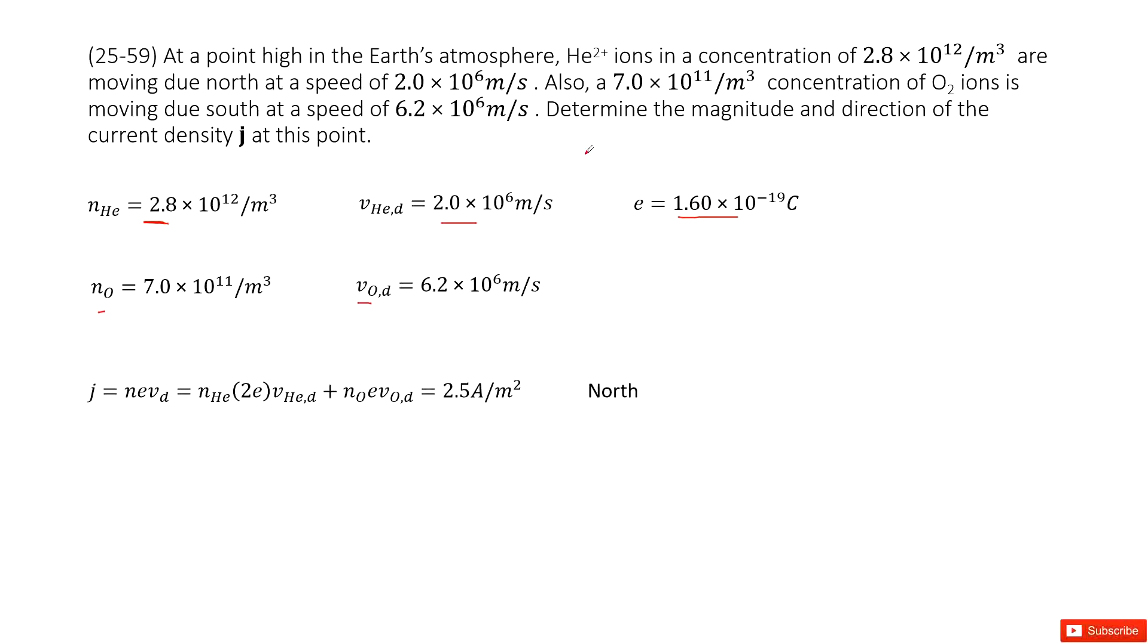So it's very easy. We can see by definition, the current density equals n times e times v_d, the drift velocity. Here we need to consider the helium and oxygen separately.